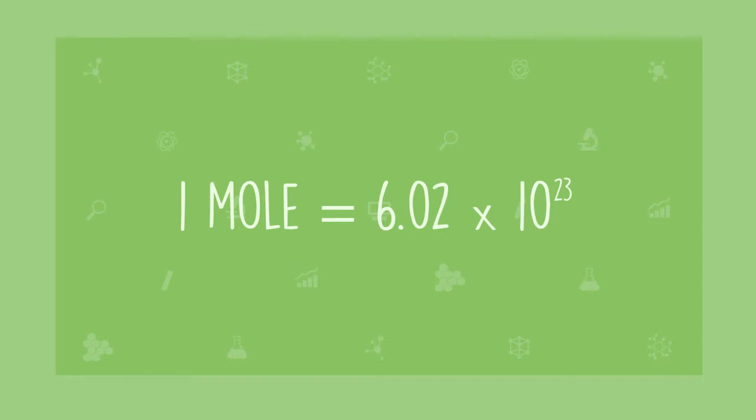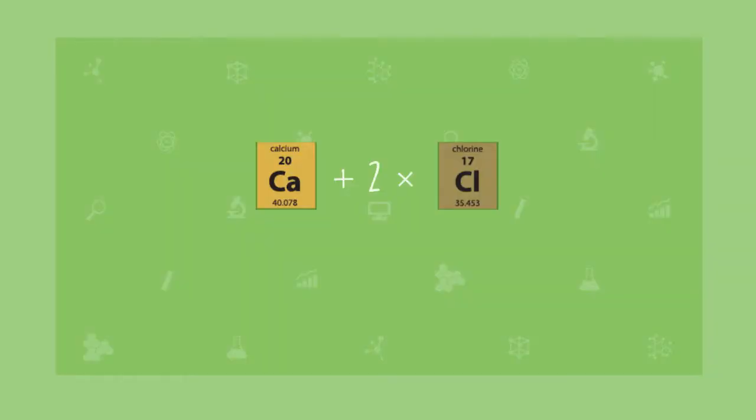It sounds funny, I know, but it has nothing to do with small mammals who live underground. We also take a look at the true work of a chemist: working out how many atoms are involved in chemical reactions and predicting the weight of the products of the reaction. This is called something a bit funny as well — stoichiometry — but for the moment you can think of it as 'how much stuff.'